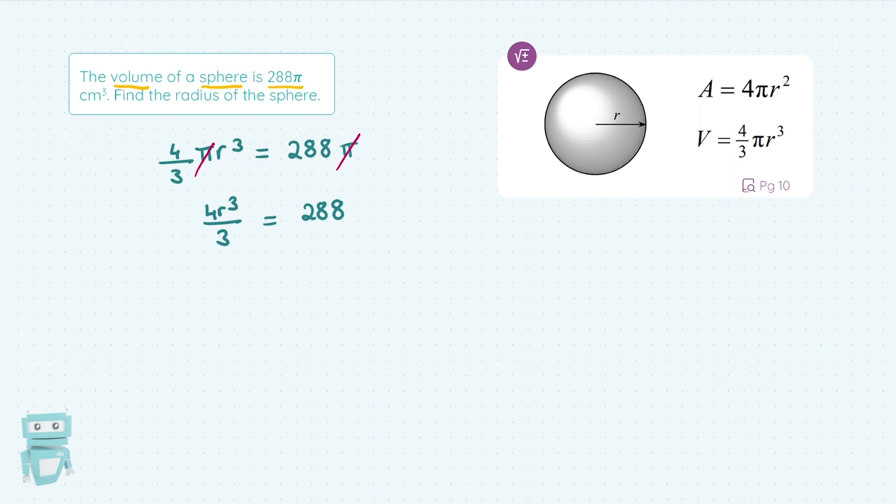Now, as there's an equal sign, we can get rid of the fraction. We're cross-multiplying, or multiplying across by the common denominator. So, 288 times 3.